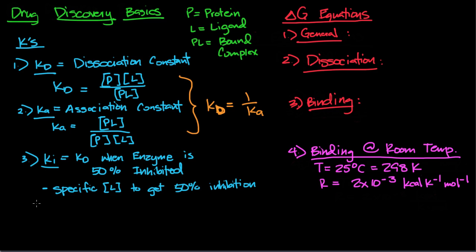It follows then that at 50% inhibition, the concentration of free protein equals the concentration of bound protein. What ends up happening is your Kd becomes just the ligand concentration, because if [P] equals [PL], then this whole fraction is equal to one, and Kd just equals a specific ligand concentration.